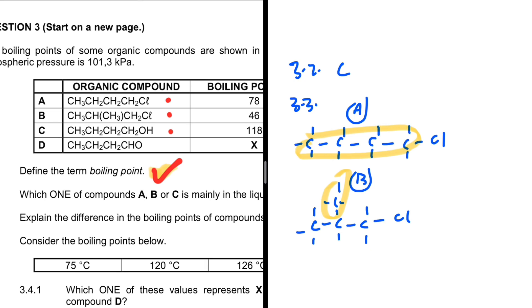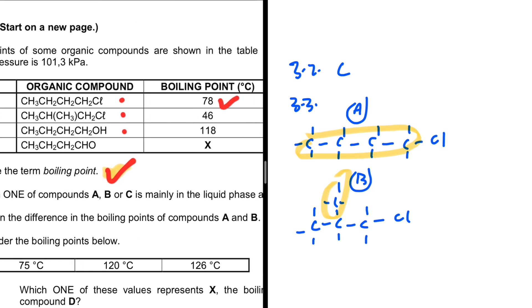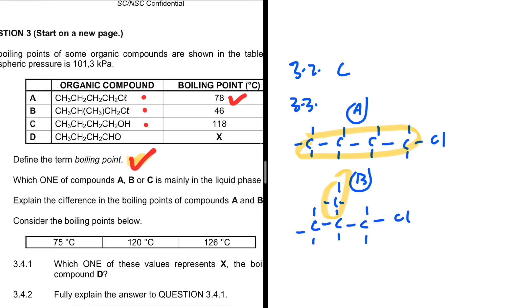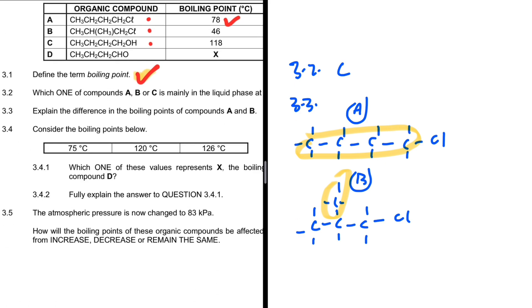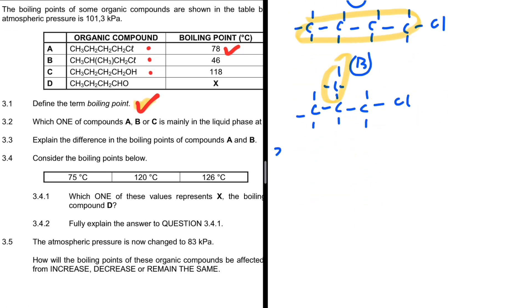The difference in boiling points of compounds A and B is because compound A is less branched compared to compound B. So compound A has more surface area, stronger intermolecular forces, and more energy is required to overcome the intermolecular forces in compound A. That is why compound A has a higher boiling point compared to compound B, because it is less branched.